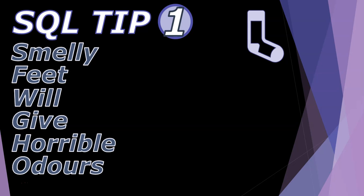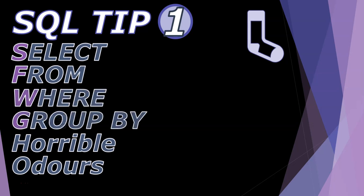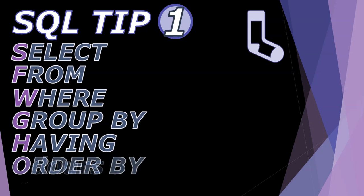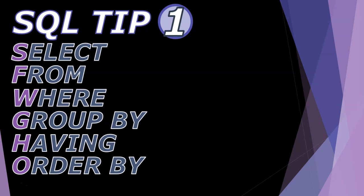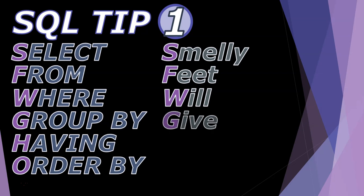When you write SELECT statements, a lot of people forget the order — when to put the WHERE and the GROUP BY. This rhyme helps: SELECT, FROM, WHERE, GROUP BY, HAVING, ORDER BY. So: SELECT the field names, FROM the table names, WHERE we put our filter criteria, GROUP BY particular field names, HAVING particular filter criteria, then ORDER BY a field in ascending or descending order. Smelly feet will give horrible odors.